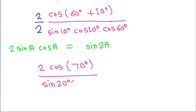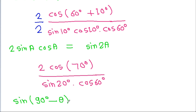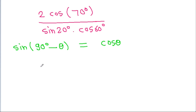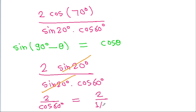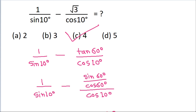We know that sin 90 degree minus theta equals cos theta, so cos 70 degree equals sin 20 degree. The sin 20 degree terms cancel, leaving 2 divided by cos 60 degree. Since cos 60 degree equals 1 by 2, we get 2 divided by 1/2, which equals 4. So the correct option is option C.